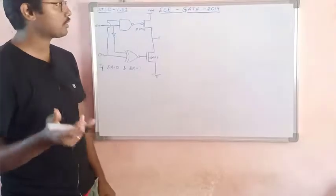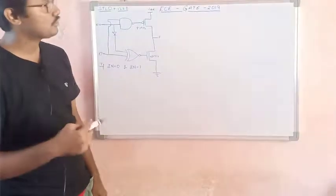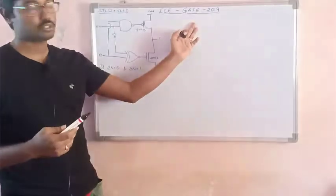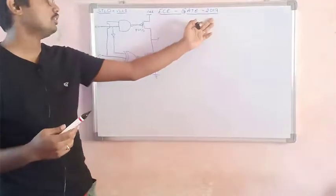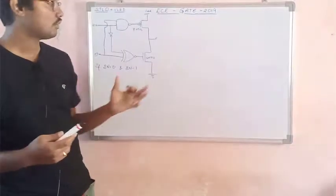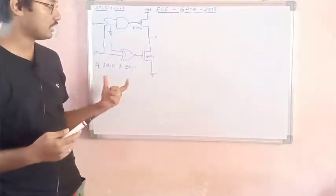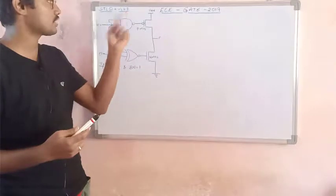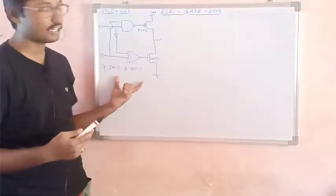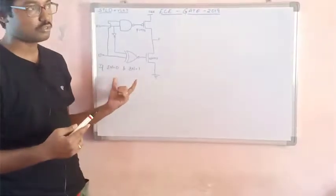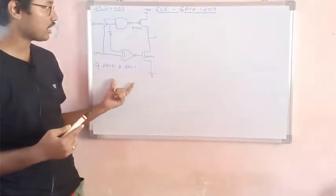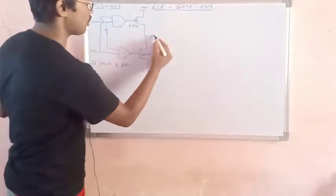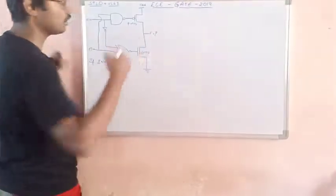Hi, welcome back to my next video. In this video we are going to see the GATE 2019 question paper. In this we have given an HDLD plus VLSI module diagram. With this diagram they have asked what is the value of F.